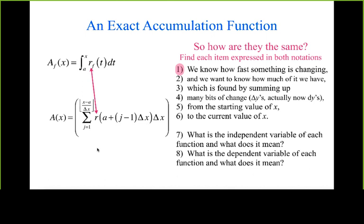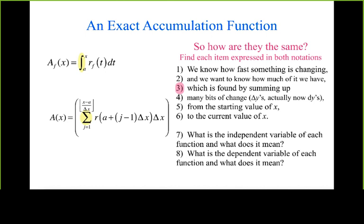We want to know how much of it we have — Yasra says that's just the whole thing, the value of the function. That's the same for the other one too, which is found by summing up. Where do we see the idea of summing up in the first one? Donna says the integral sign. And Angel says the summation symbol for the other. So that's how we keep track of all the accumulation up till then — summing up.